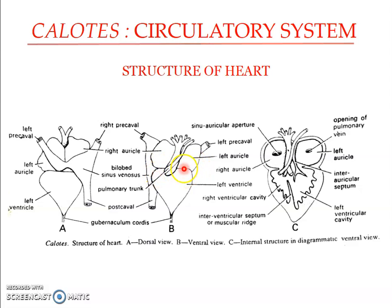Both auricles are clearly demarcated from the posterior ventricle by a transverse auriculo-ventricular groove, which distinctly marks the auricle from the ventricle. Unlike Hoplobatrachus, which we studied as the type species, the truncus arteriosus is absent in Calotes, but the sinus venosus is present, placed on the dorsal side of the right auricle.